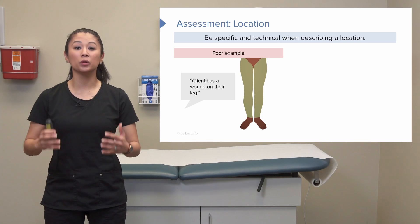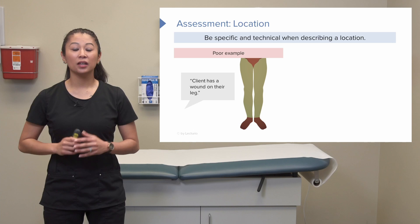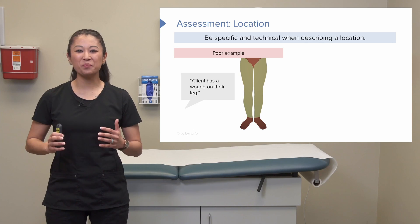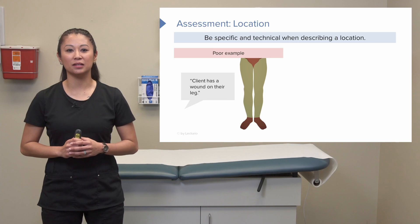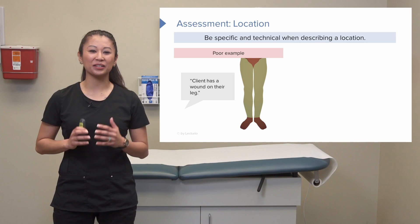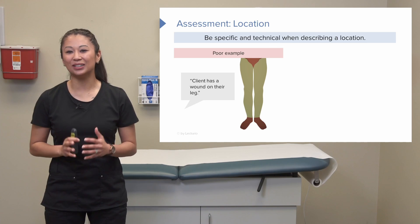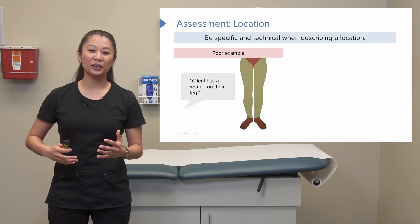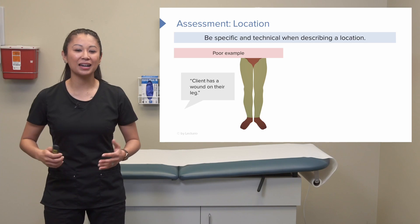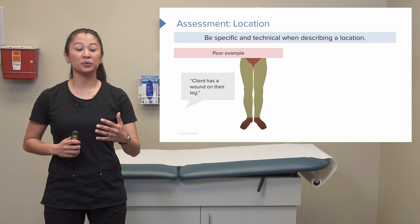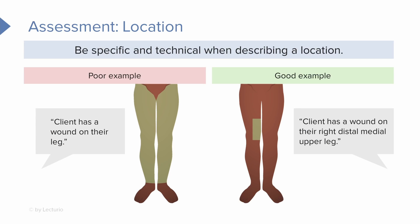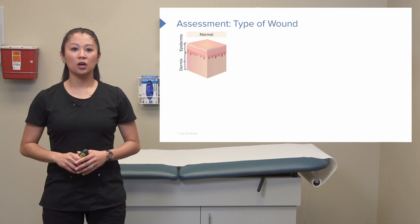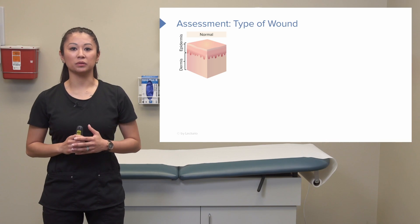The first category is location. It's really important that we're specific about where that wound is. Here's a poor example: 'client has a wound on their leg' — that's not very helpful. It could be anterior or posterior, we don't know if it's on the upper thigh. A much better description would be: 'client has a wound on their right distal medial upper leg.' That's much more specific than the previous example.